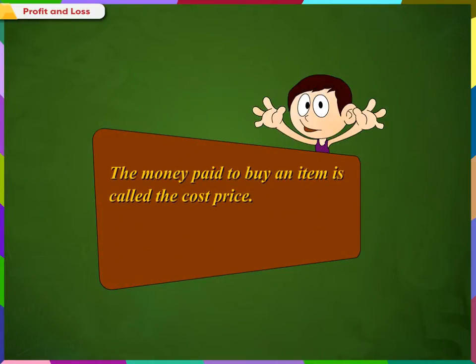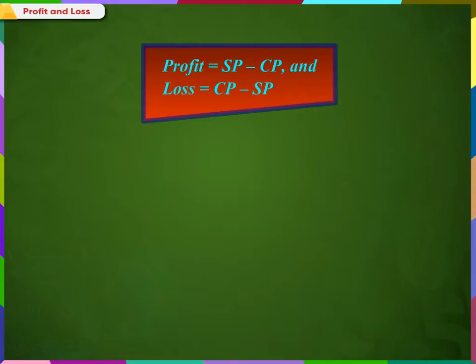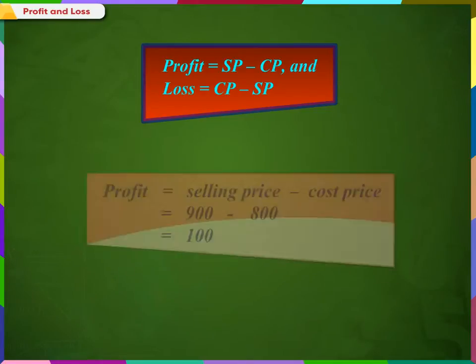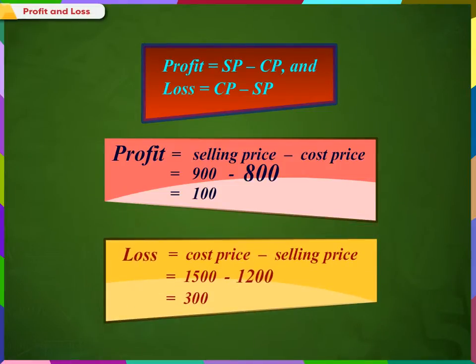Remember, the money paid to buy an item is called the cost price. The money received on selling an article is called the selling price. Profit is equal to SP minus CP, and loss is equal to CP minus SP. There is a trick to remember these formulae: by looking at the CP and SP, find out if it is a profit or loss, and then subtract the lower number from the higher number.